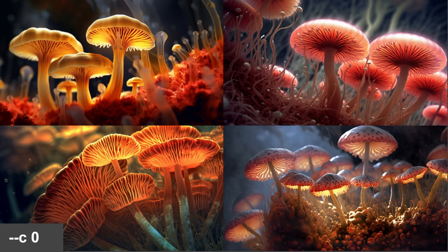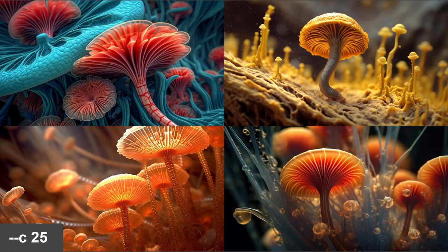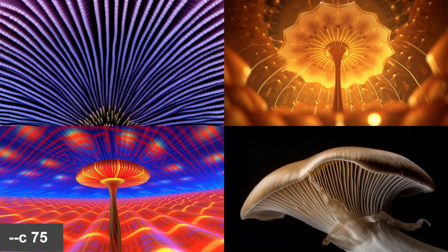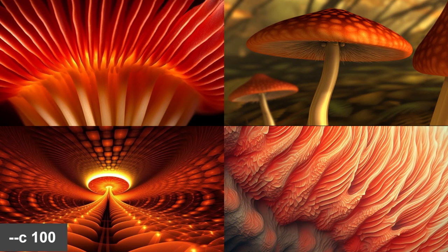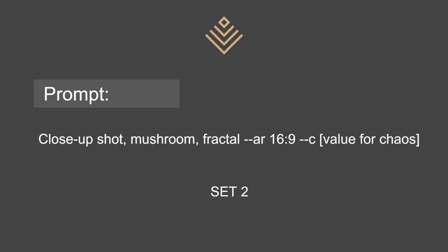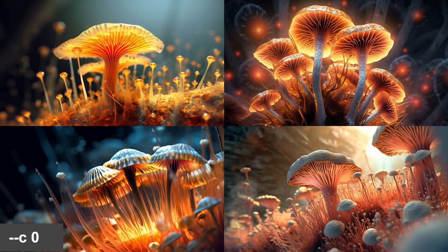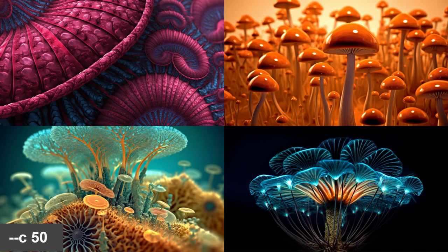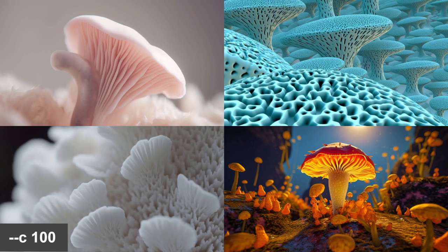Here is chaos zero, 25, 50, 75, and 100. Now while I run these with different chaos numbers, I evaluate and observe what I see. I'm running another set because I would highly recommend running more than one rerun of every single one of your prompts. Set two at zero, 25, 50, 75, and 100.